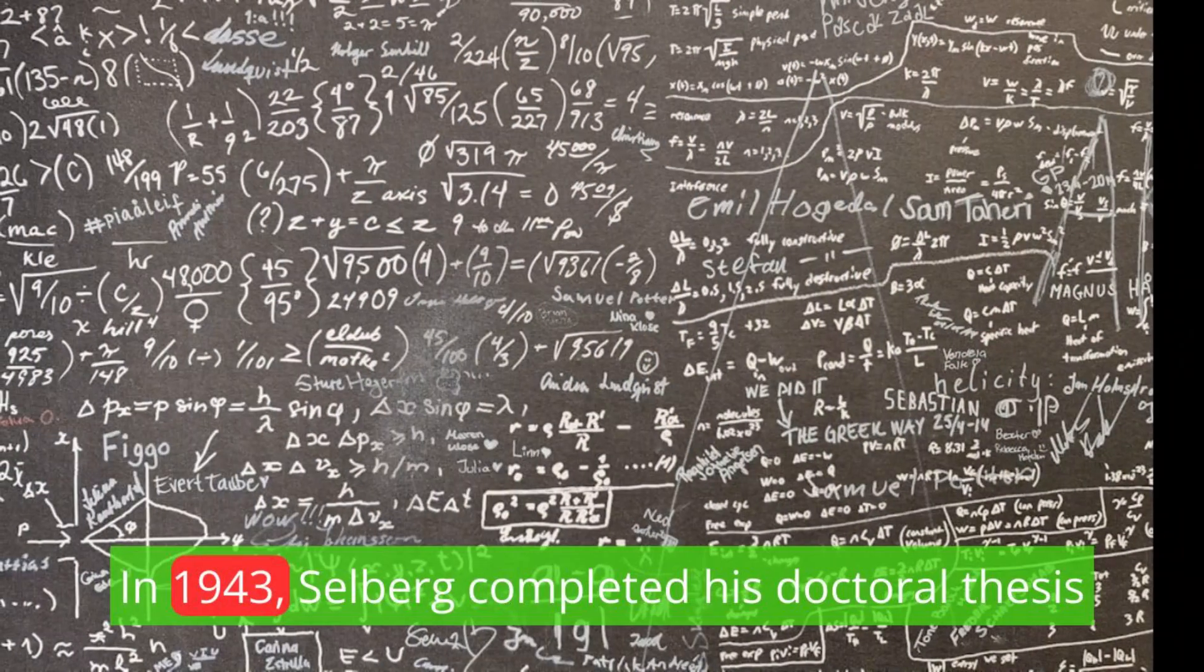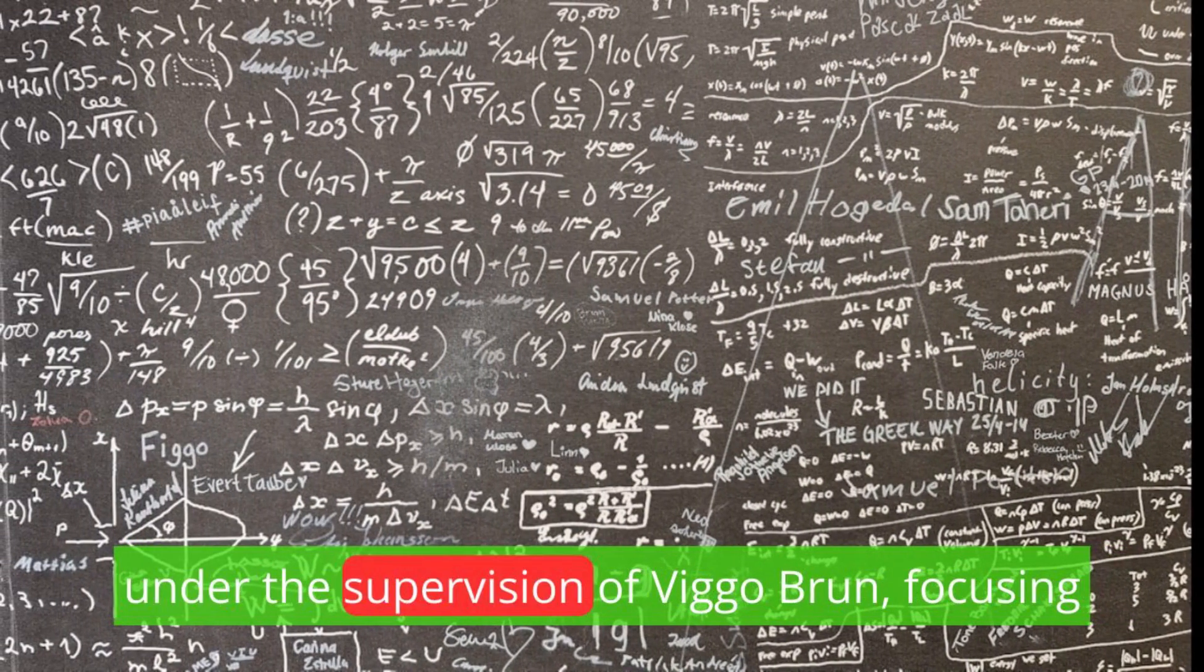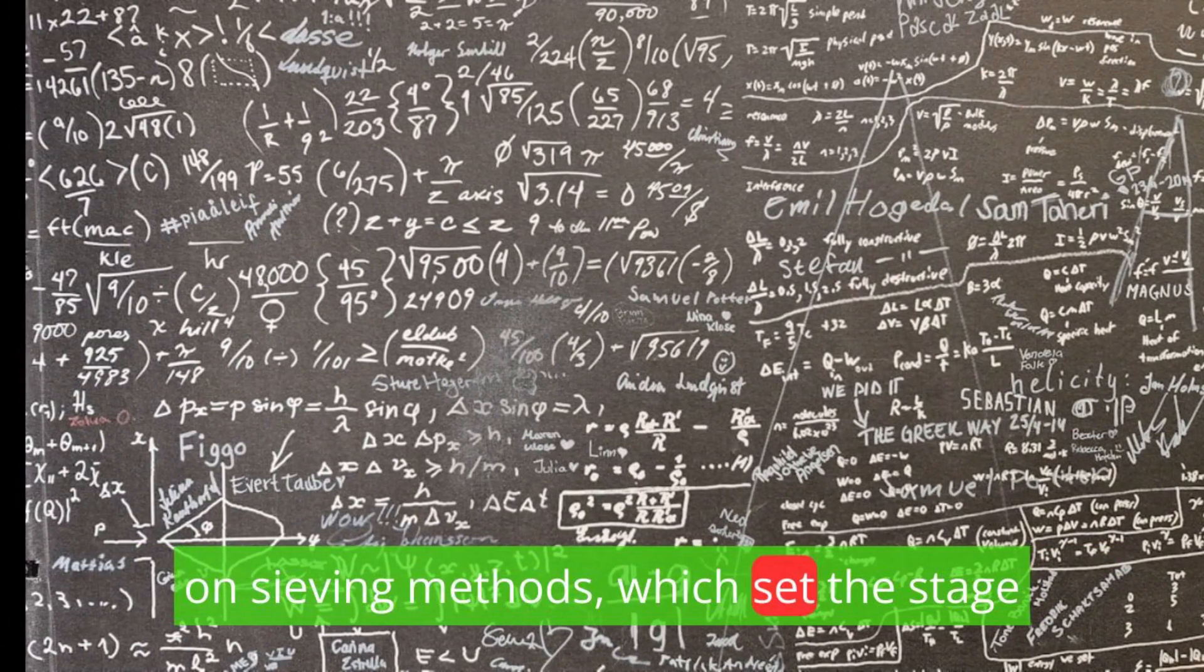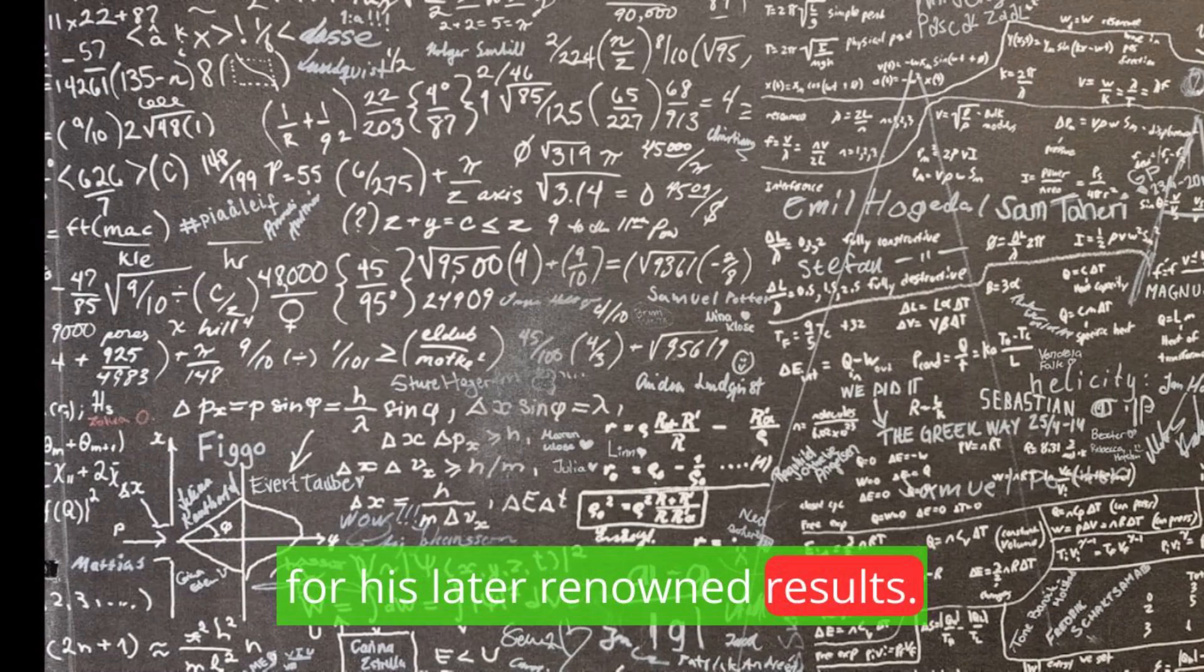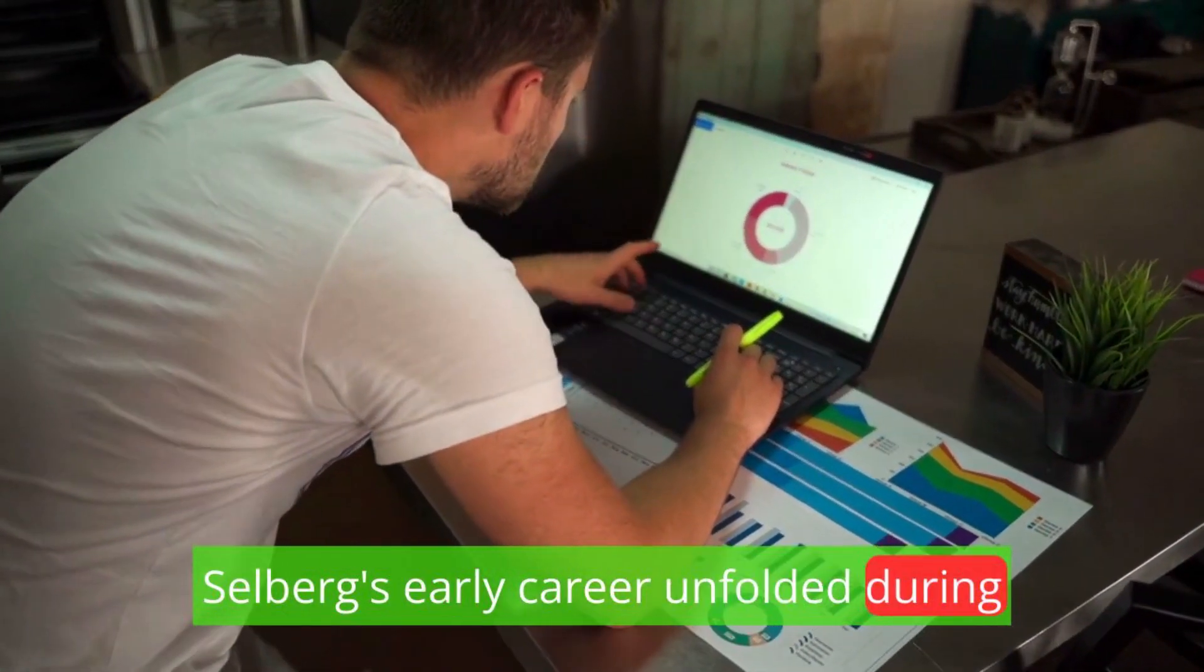His early work during his undergraduate studies already hinted at his future contributions to number theory. In 1943, Selberg completed his doctoral thesis under the supervision of Viggo Brun, focusing on sieving methods, which set the stage for his later renowned results.